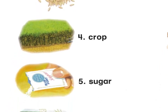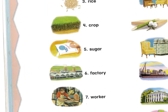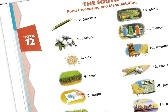A crop is a bunch of plants grown at the same time that farmers harvest to sell. Sugar is one of the foods grown in the South, and it comes from the sugar cane. The South is also known for manufacturing, and that happens in a factory.